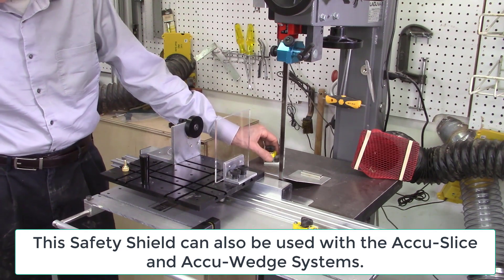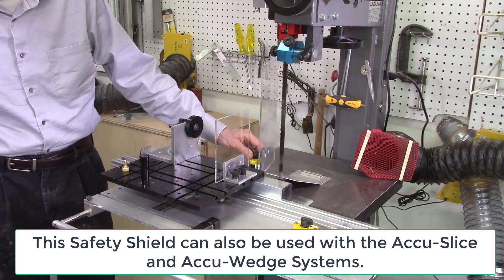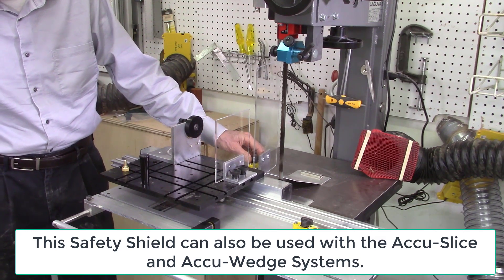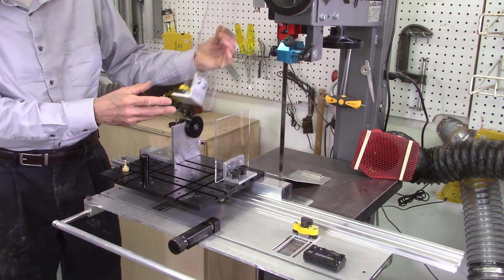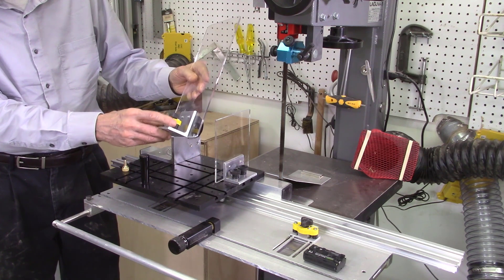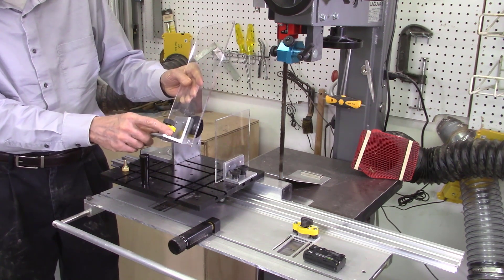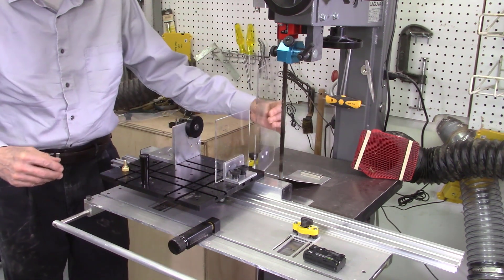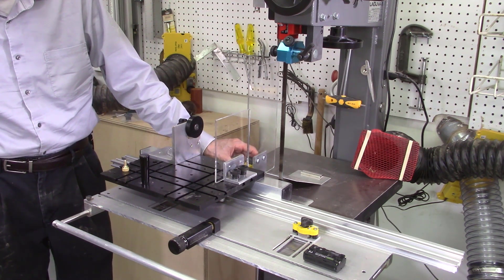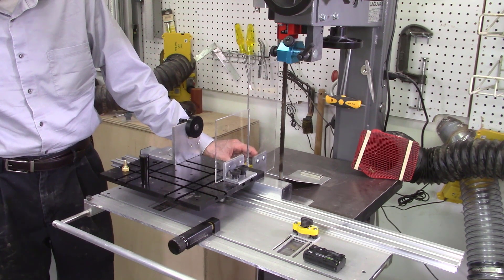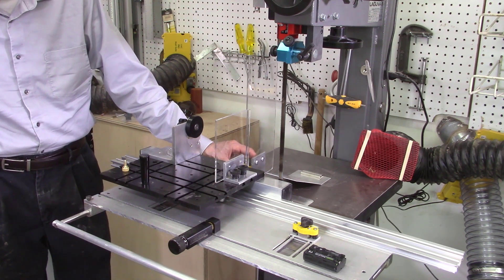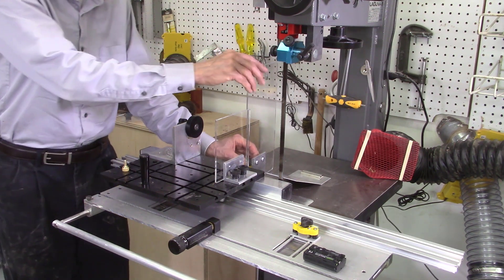The second safety shield mounts to the bandsaw on the opposite side of the bandsaw blade. This shield is comprised of a six inch by twelve inch tall plastic shield with aluminum mounting bracket with a mag jig clamp on the base. This shield is positioned close to the bandsaw blade but far enough away so that it does not interfere with the board you are cutting. The shield is secured to the bandsaw table using the mag jig clamp.